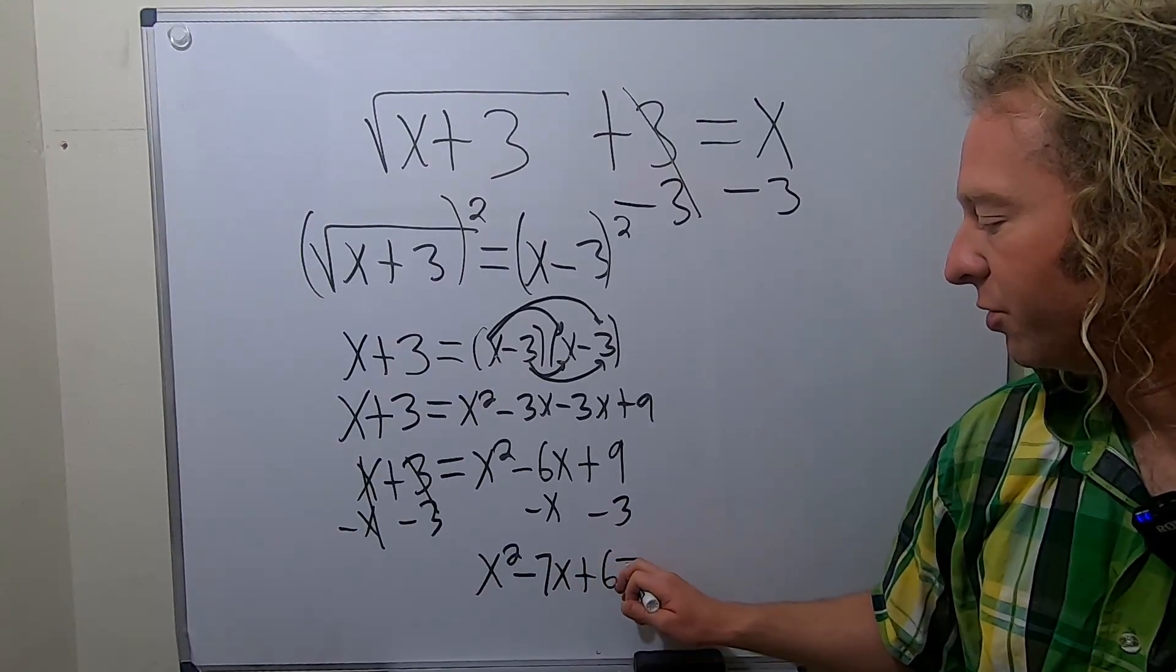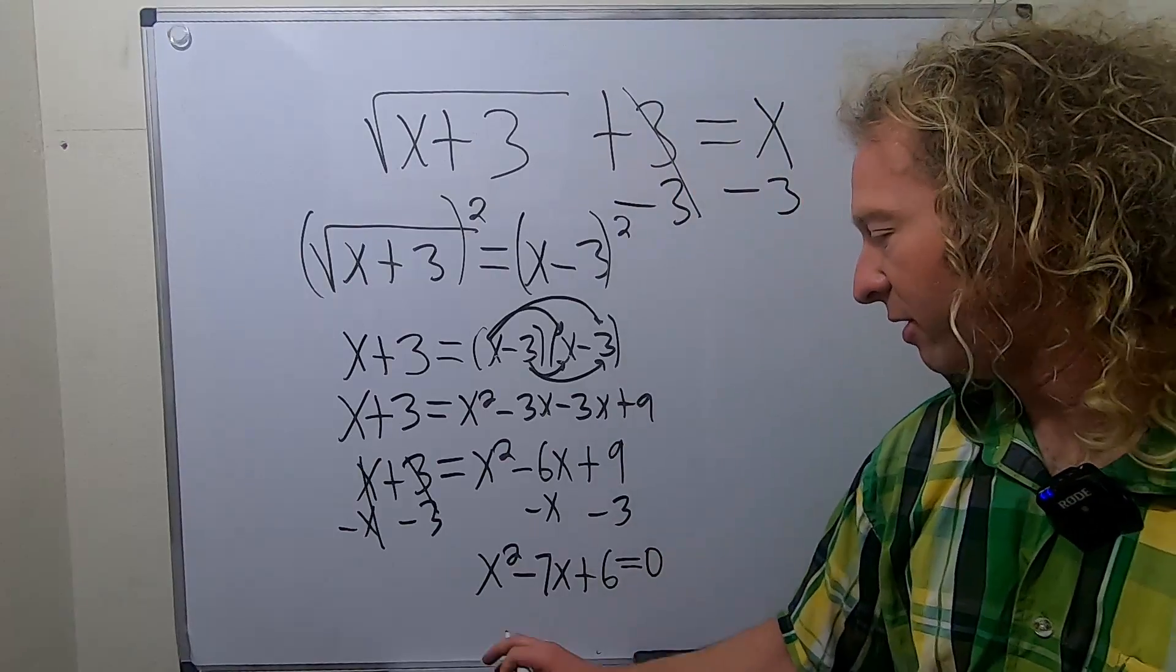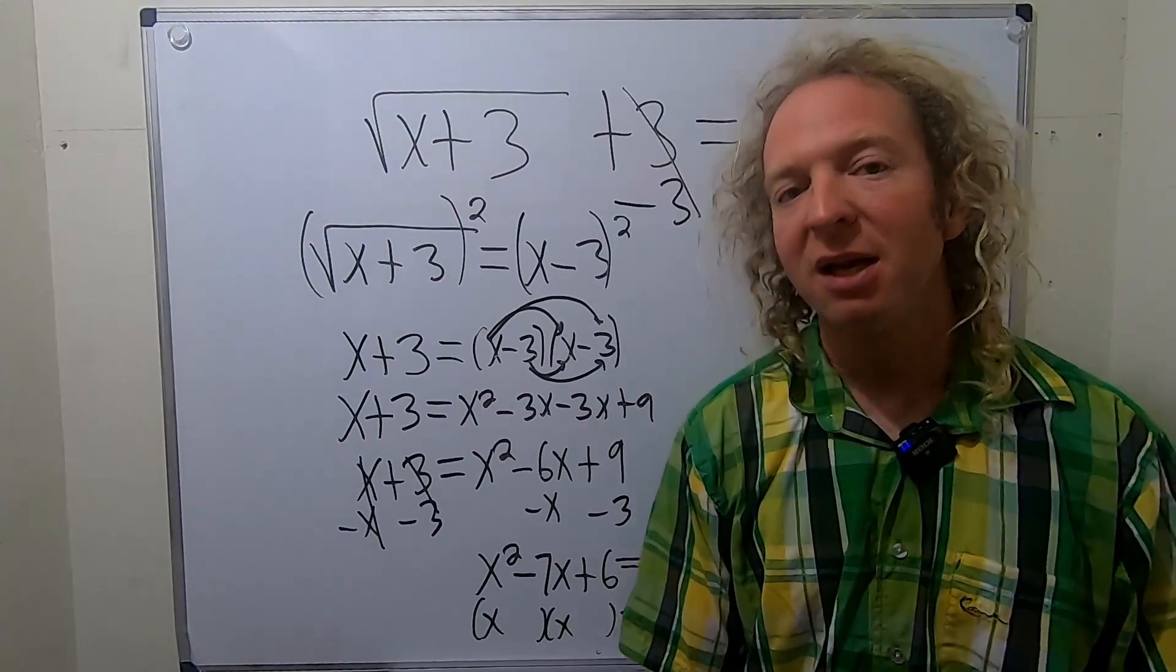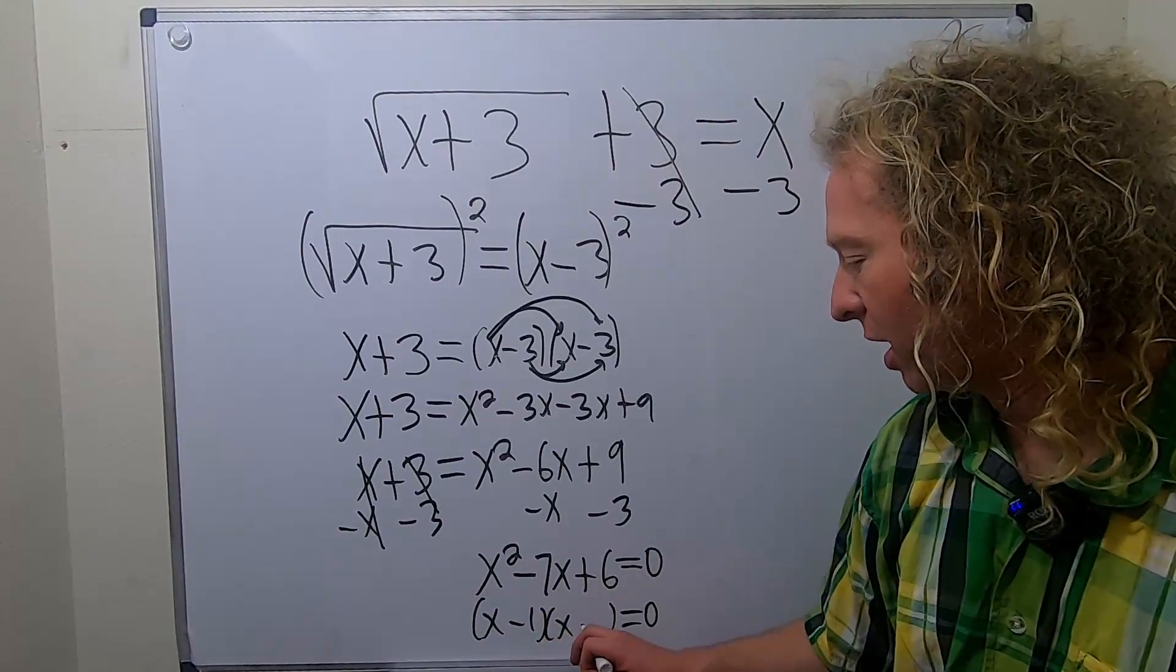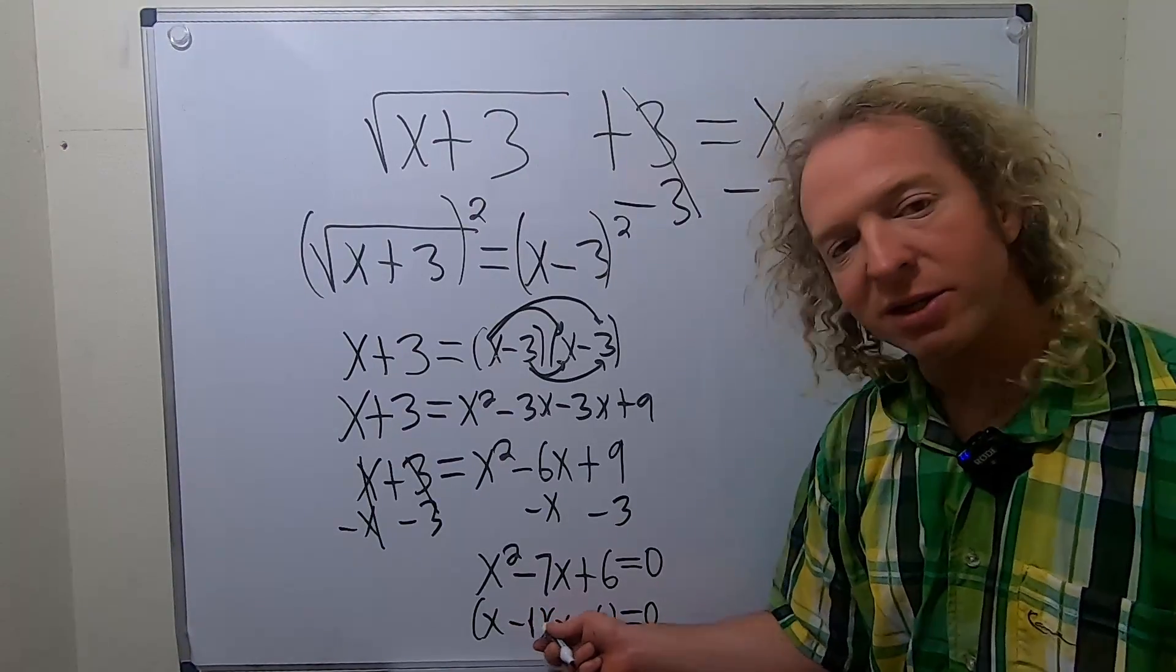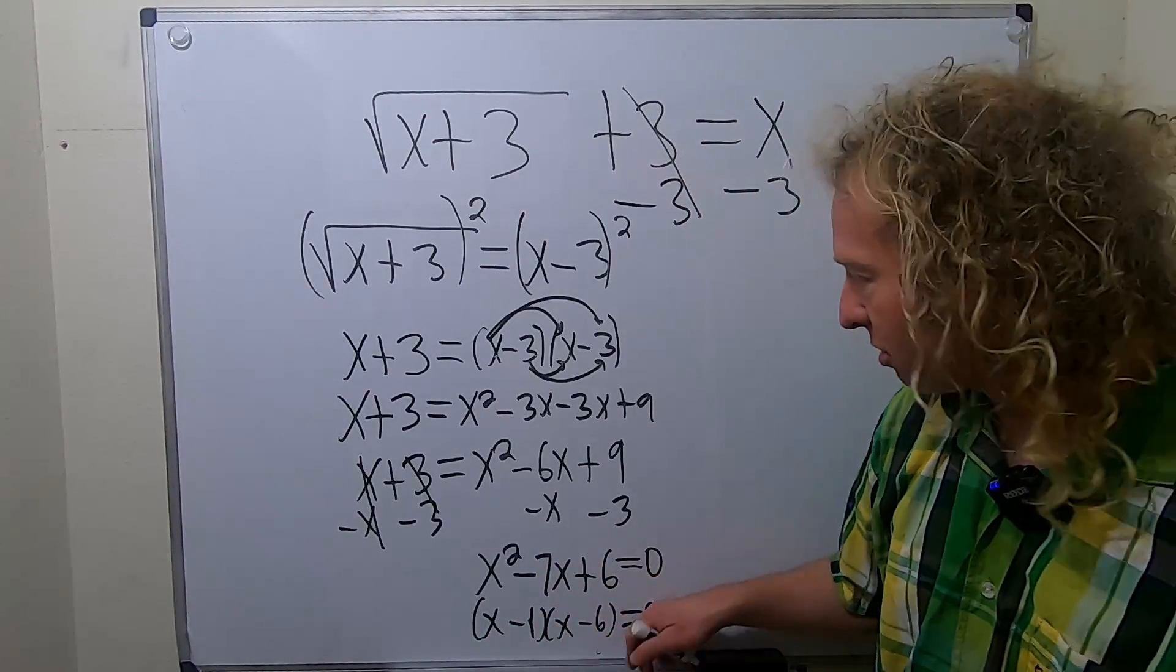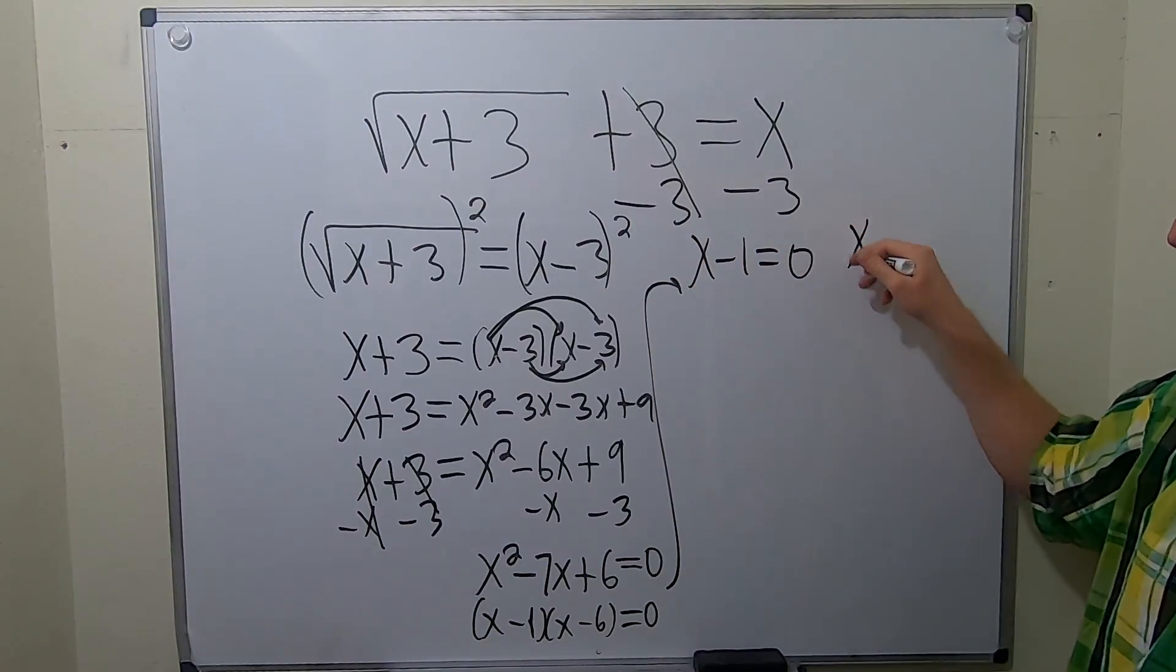This should factor. It should be x times x. We need two numbers that multiply to 6 and add to negative 7. I'm thinking negative 1 and negative 6 will work. Yep, that'll work, because negative 1 times negative 6 is 6, and negative x and negative 6x is negative 7x. You have a product equal to 0, so you set each factor equal to 0.